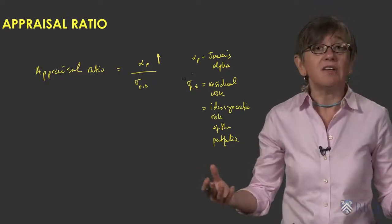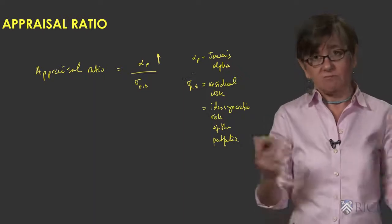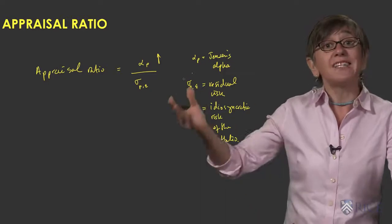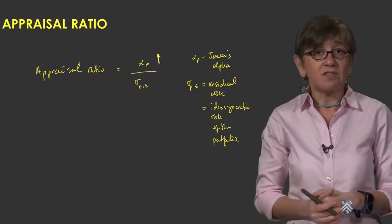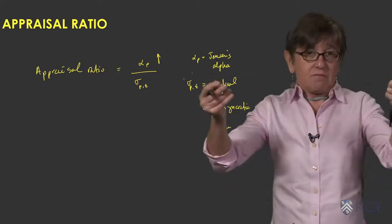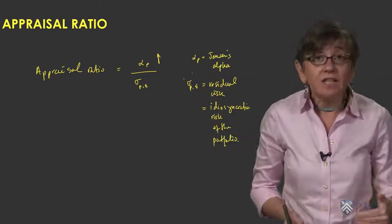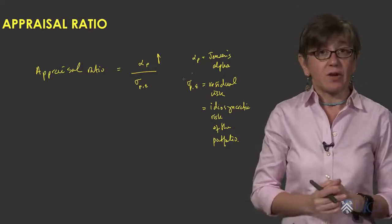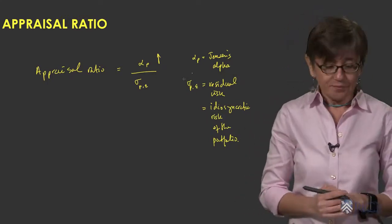So basically what you do is you compute the residual for each observation. It's basically the actual return minus the predicted return given your Alpha and Beta estimates. The difference is the residual, the error term. And now you take the standard deviation of all those residuals and that is your portfolio residual risk, or the idiosyncratic volatility of the portfolio.